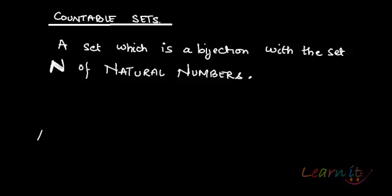Let us define a countable set. What do we mean by a countable set? Any set which is essentially a bijection with the set of natural numbers is called a countable set. So any set which roughly speaking has the same number of elements as natural numbers — that set is called a countable set, or essentially any set whose elements